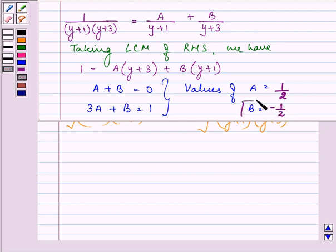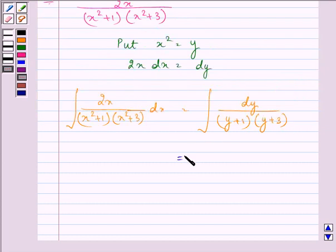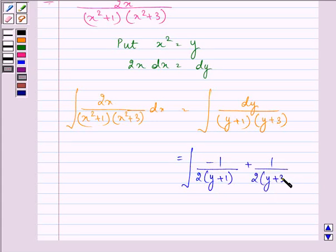So writing the given rational function, we have the integral of 1 upon 2 y plus 1 minus 1 upon 2 y plus 3 dy.